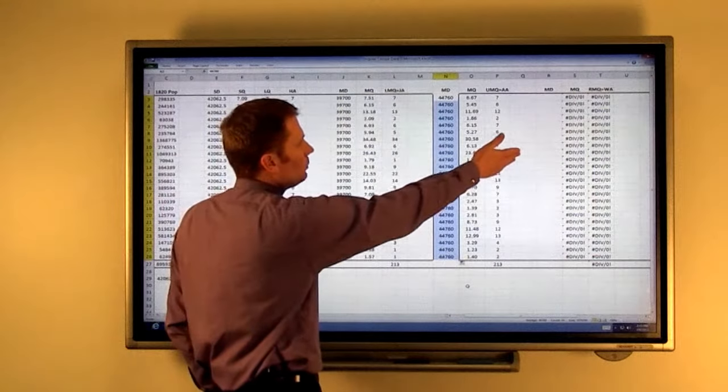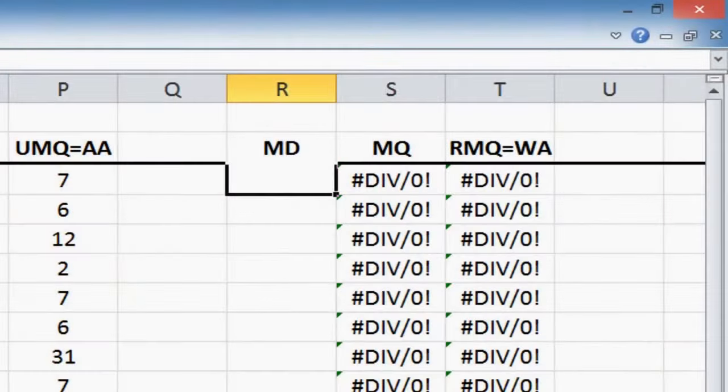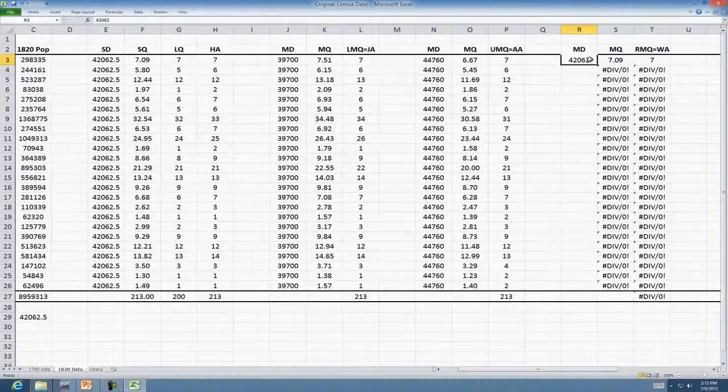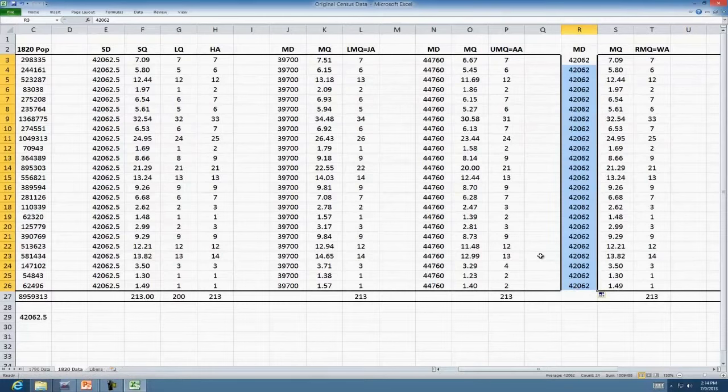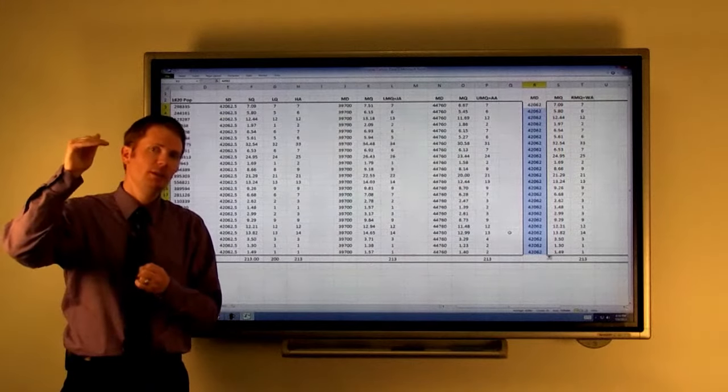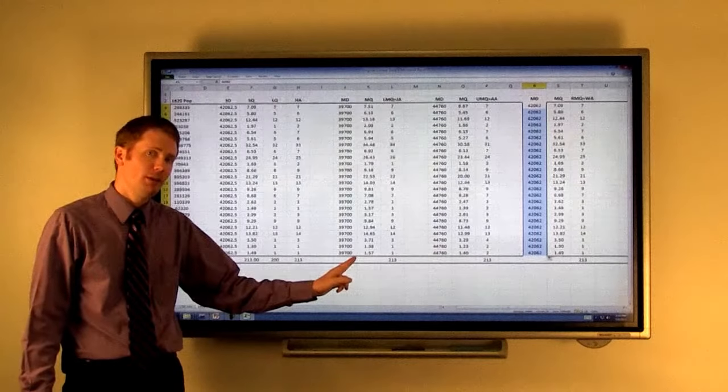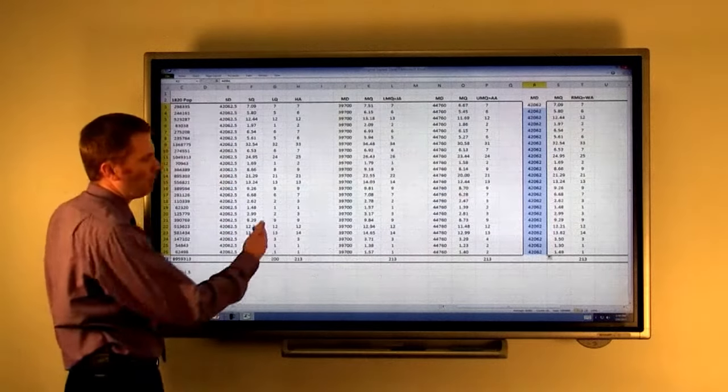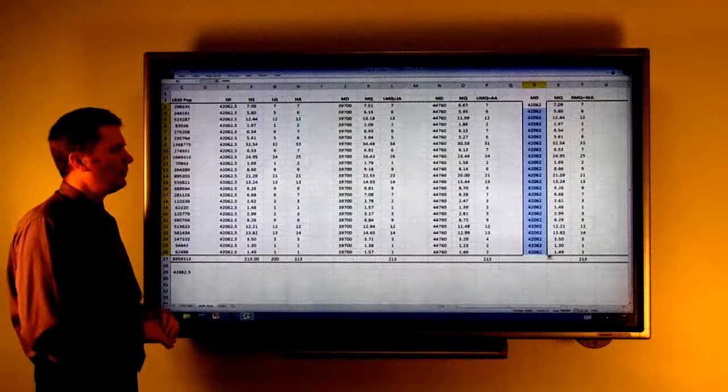The last one, Webster's method. Let's just try our original standard divisor. If we put in 42062.5 and propagate that down, I've instructed Excel to round according to normal rounding methods. It's perfect the first time, 213. So with Webster's apportionment method, sometimes the modified divisor is larger than the standard divisor. Sometimes it's smaller. And sometimes it can work as the exact same thing. With Jefferson's apportionment method, the modified divisor is always smaller. And with Adam's apportionment method, the modified divisor is always larger. But we can find a number that will make all these methods work. And they all give out some slightly different variety of who gets what.